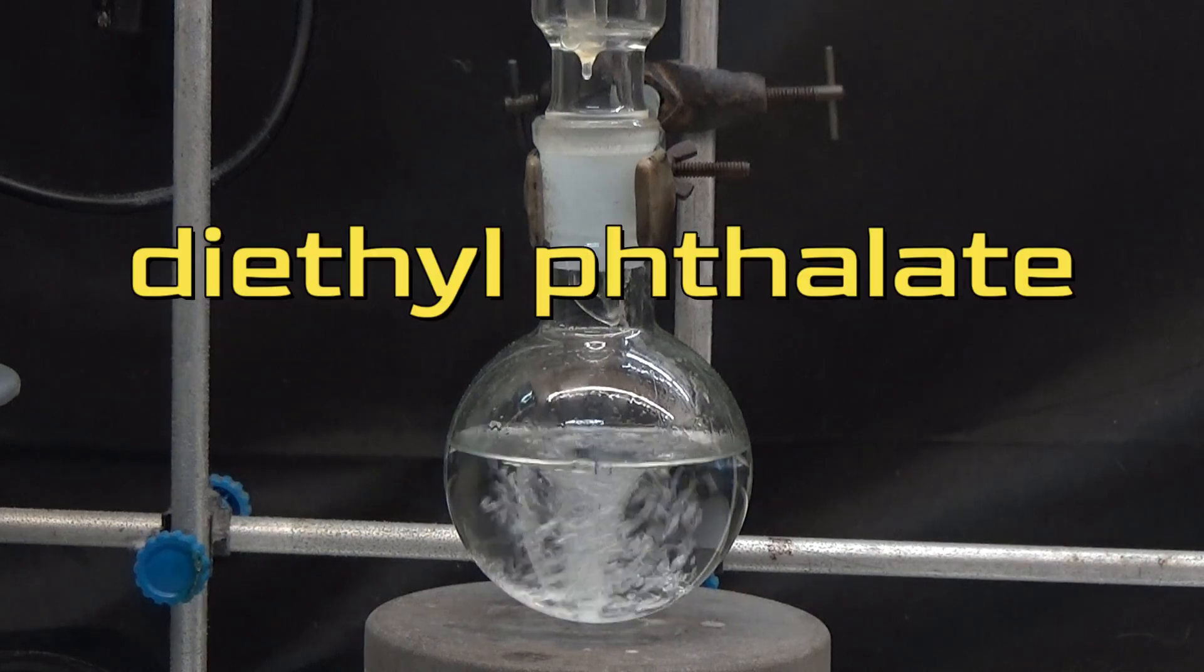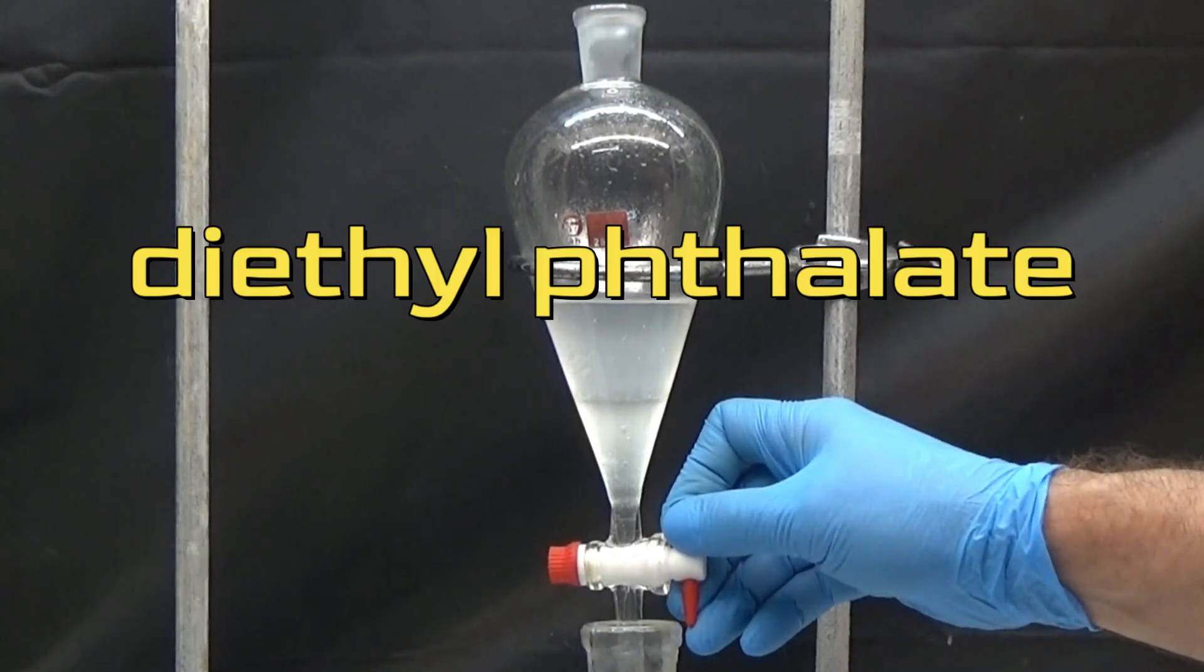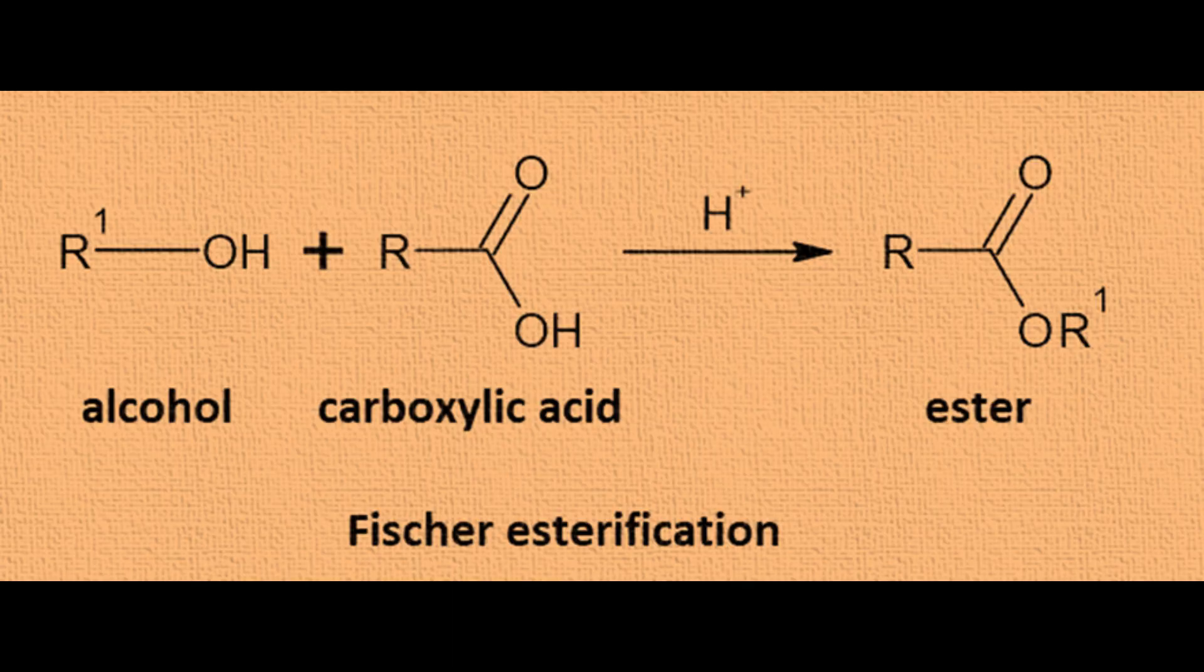In this video, we will obtain diethyl phthalate by Fischer esterification. Fischer esterification consists of the formation of an ester by refluxing a carboxylic acid and an alcohol with an acid catalyst.